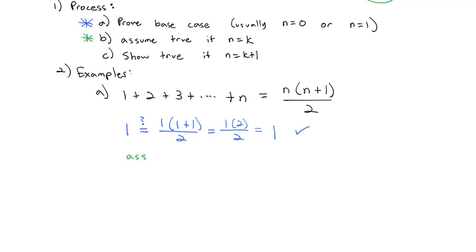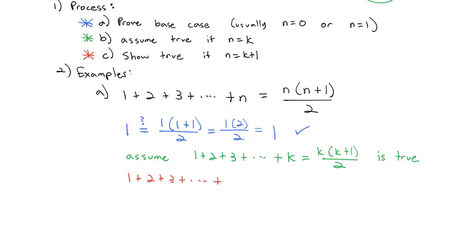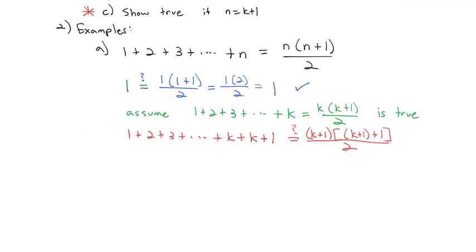Then we assume 1 plus 2 plus 3 plus all the way out to some number k works in the formula. So now, with n equal to k, we have k times k plus 1 over 2. We're going to assume that is true. If that's the case, we're going to try and show that it works for n equals k plus 1. In other words, we're going to take 1 plus 2 plus 3 all the way out to not just k, but to k plus 1. Does that equal k plus 1 times k plus 1 plus 1 divided by 2?